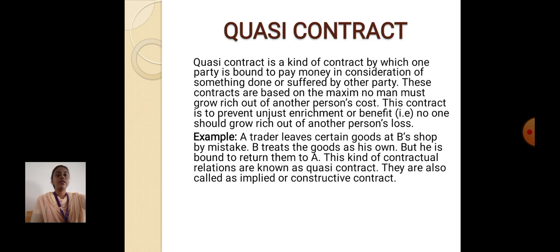Quasi Contract: A quasi contract is a kind of contract by which one party is bound to pay money in consideration of something done or suffered by the other party. These contracts are based on the maxim that no man must grow rich out of another person's cost. This contract prevents unjust enrichment or benefit — that is, no one should grow rich out of another person's loss.